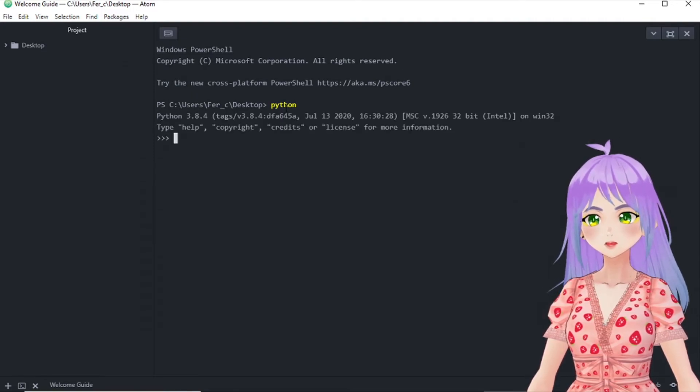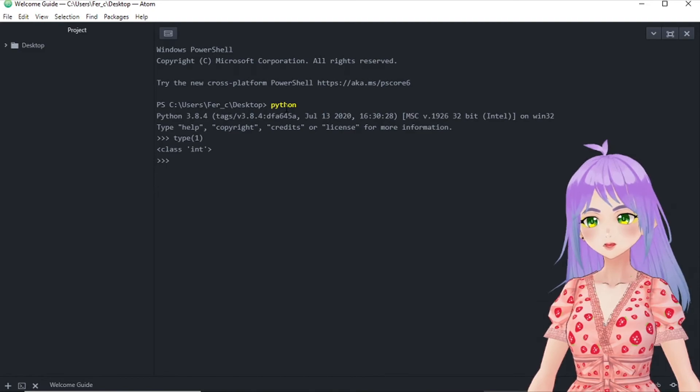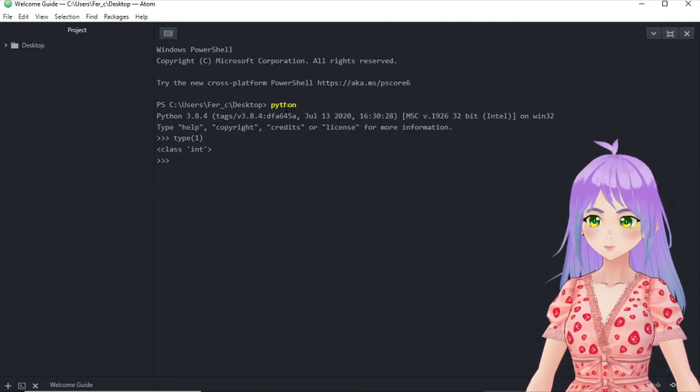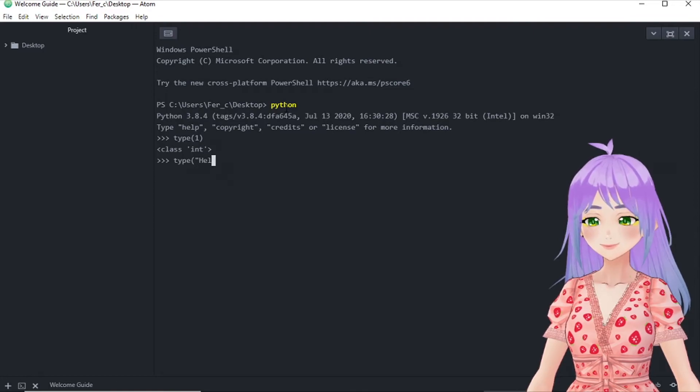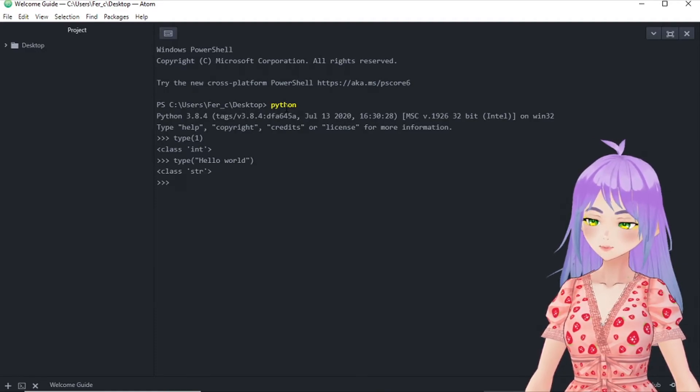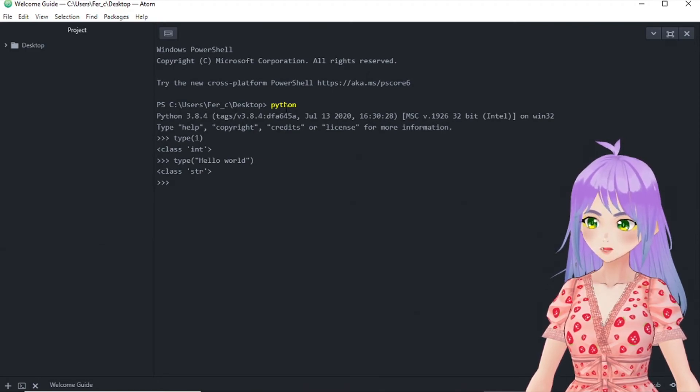The next thing that we have to do is start with our command. So we write type, open parenthesis and 1 and close parenthesis and press enter. Here we can see that the class of 1 is int or integer. And if we try it with hello world, and press enter, it is going to tell us that the class is a string, meaning that it's a text.